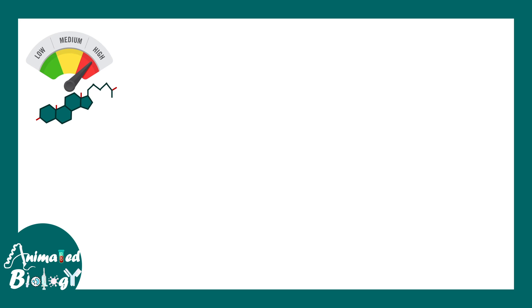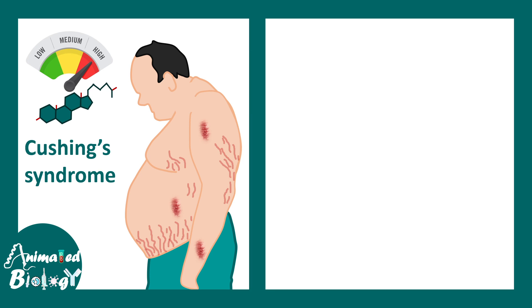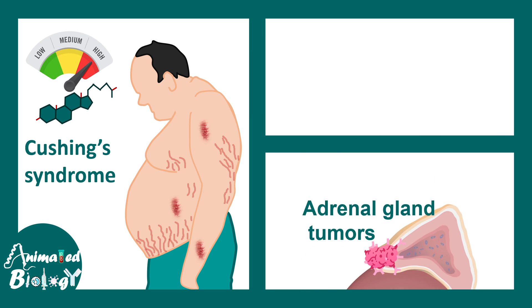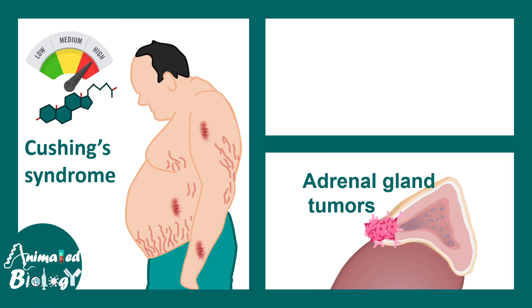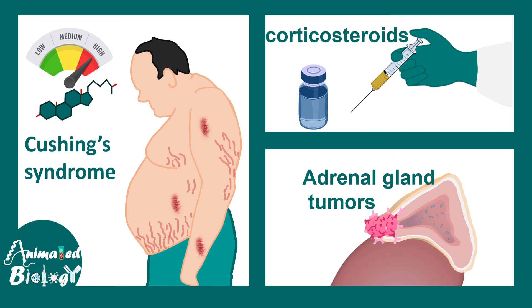When there is a very high level of cortisol in the blood, it's not good. There are several conditions such as Cushing syndrome where you have abnormally high levels of cortisol, which can cause problems. Other reasons for high cortisol in blood include adrenal gland tumors, which overproduce cortisol, as well as taking corticosteroids, which can also lead to increased blood cortisol levels.